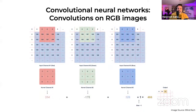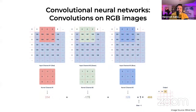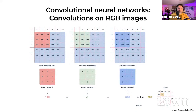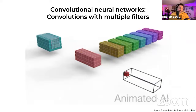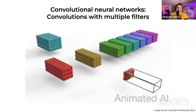When the input has more than one channel — for example, a red, green, blue color image — the filter needs to have a matching number of channels. We perform the convolution on each channel, add the results together, and the result is a two-dimensional array called a feature map of output values representing a filtering of the input. You can also apply multiple filters in the convolutional layer to detect multiple features, and the output will have the same number of channels as the number of filters.